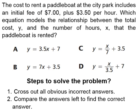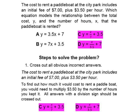The steps to solve the problem are: number one, cross out all obvious incorrect answers; and number two, compare the answers left to find the correct answer. We are going to cross out answer choice C and also answer choice D. To find out how much it would cost to rent a paddle boat, we would need to multiply $3.50 by the number of hours. Any answer that has a division sign should be crossed out, and C and D both have a division sign, so we can automatically cross those out.